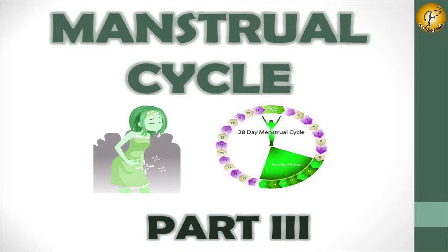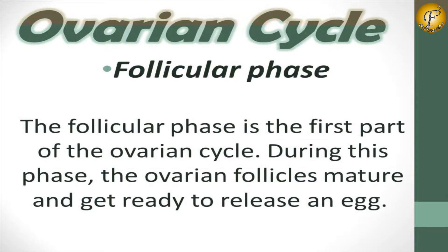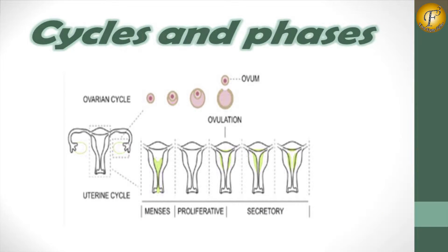Menstrual cycle part 3: ovarian cycle, follicular phase. The follicular phase is the first part of the ovarian cycle. During this phase, the ovarian follicles mature and get ready to release an egg.